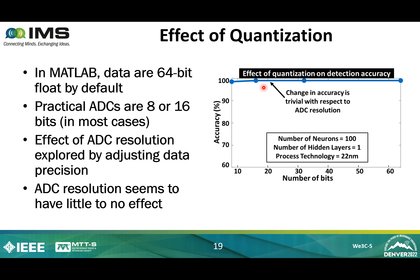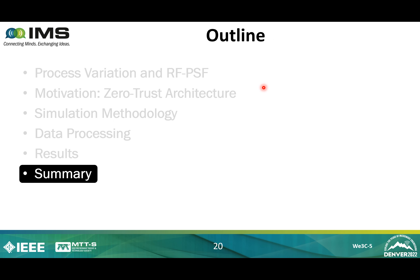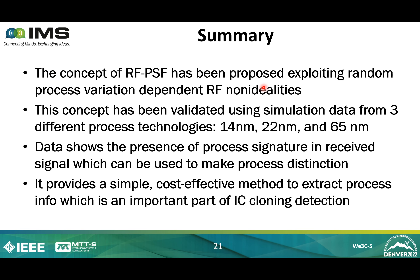Now I will summarize my presentation. In this work, we have proposed RFPSF, a process variation-based process distinction method. Using simulation data from three different processes — 65 nanometer, 22 nanometer, and 40 nanometer — we have shown that RFPSF achieves 99% best-case accuracy and 90% average accuracy in process distinction. We have explored the effect of baseband sampling rate and ADC resolution, two practical limitations in the RF receiver chain. Finally, this work provides a low-cost, fast, and efficient process distinction method that can help in the fight against IC counterfeiting.